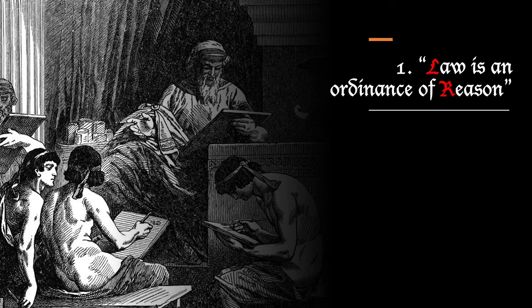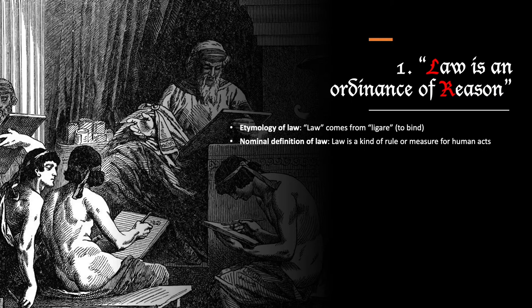Now that we've stated the definition of law and its four parts, let's look at each of these parts more closely, beginning with the first part, namely that law is an ordinance of reason. Let's notice the etymology of the word law. The word law comes from the Latin word ligare, meaning to bind. Thus, we might say that the nominal definition of law is that law is a kind of rule or measure for human actions. This nominal definition will help us explain why we say that law is something pertaining to reason.